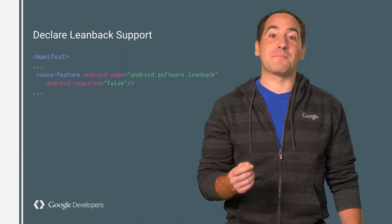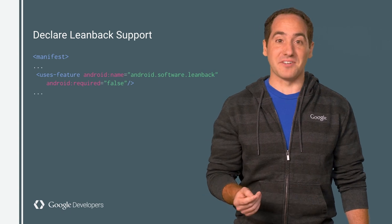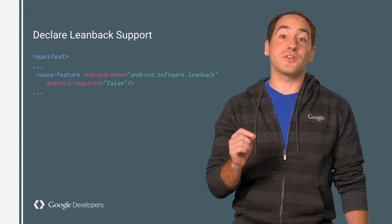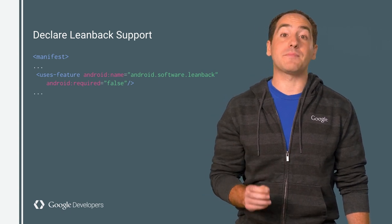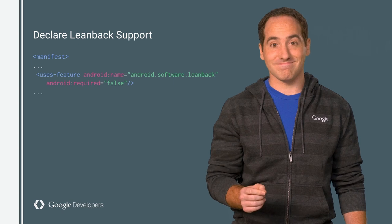Next, declare that your app uses the leanback feature, and be sure to set required to false so your game can also be installed on mobile.